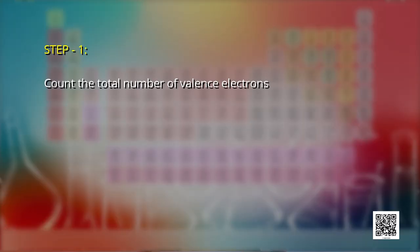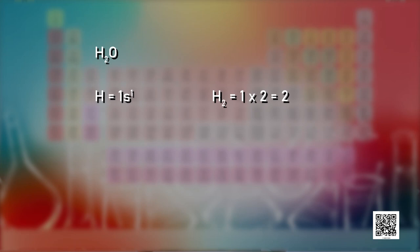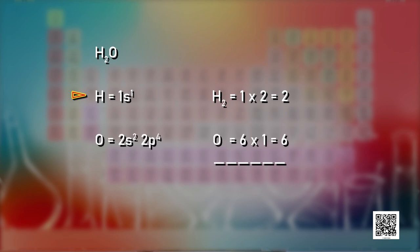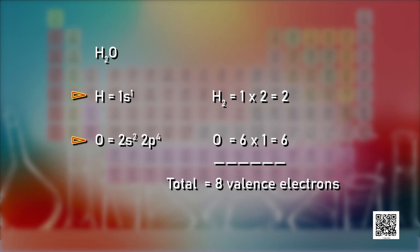Step one: count the total number of valence electrons. For example, in water (H2O), each hydrogen has one electron (1s1), multiplied by 2. Oxygen has the configuration 2s2 2p4, giving 6 valence electrons. Adding these up, we get a total of 8 valence electrons.